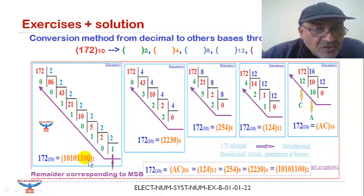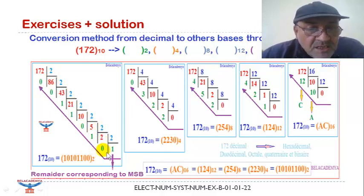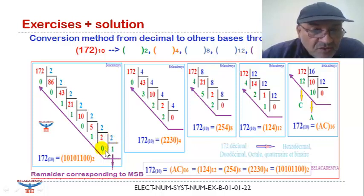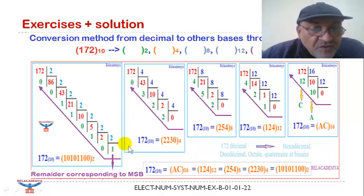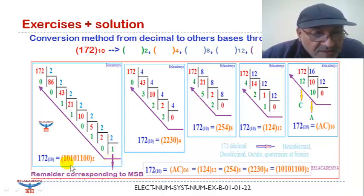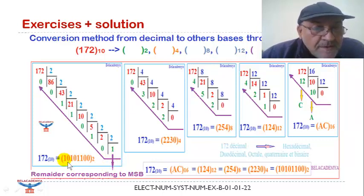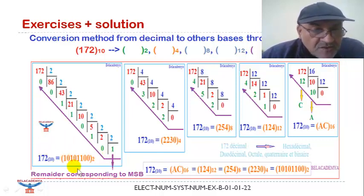Then 86 divided by 2 gives 43 with remainder 0, which is B1. We continue the successive divisions. The last step is 1 divided by 2, which gives 0 with remainder 1. This final remainder is the most significant bit (MSB). This completes the conversion of 172 to binary.